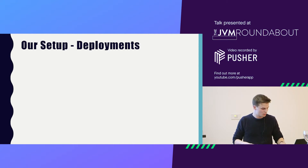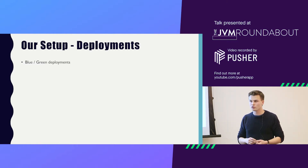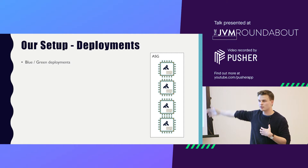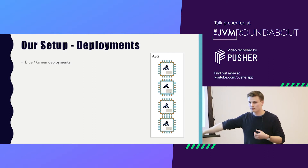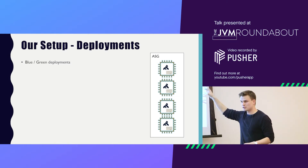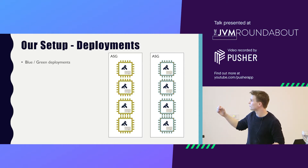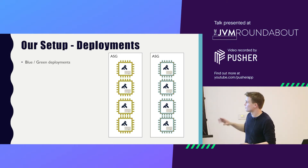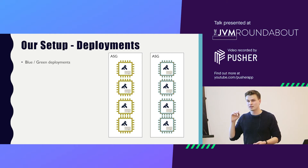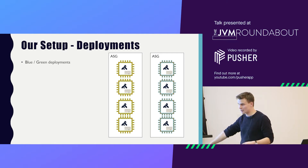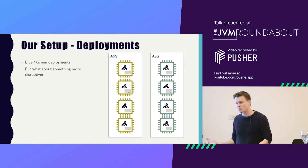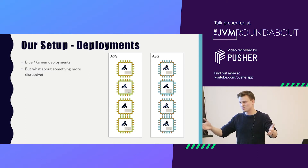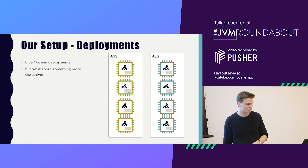Who's heard of or uses blue-green deployments? The idea is that you have your instances running — containers, virtual machines, or whatever — and you want to make a change. Instead of making the change to live running boxes, you bring up new ones and let them serve some traffic. This means you're over-provisioned for a short period. If things look bad, it's easy to get rid of the new instances; if things look good, after a period you get rid of the old ones. Being fully in the cloud means you can be very flexible — you're paying by the minute, so being doubly over-provisioned for three or four minutes isn't a big deal cost-wise.